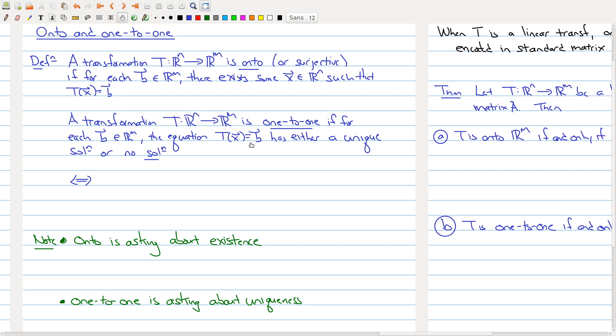Now some of you may have seen one-to-one defined a little bit differently. Another way of saying one-to-one is for all x not equal to y, so all vectors x and y not equal in Rn, then their output in terms of the transformation is also not equal. So this is just saying if two things are different in Rn, they end up being different in Rm after you stick them into the transformation.